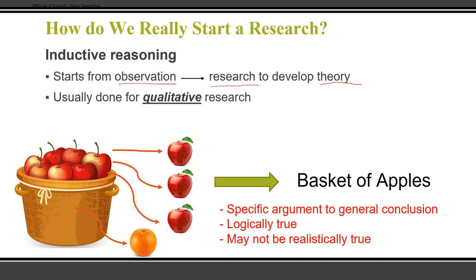From repeated observations we generalize the phenomenon into a probable conclusion — the more data we have, the greater the probability the conclusion is true. The conclusion is logically true because all three observations gave apples, but it may not be realistically true because you do not know whether there is an orange at the bottom of the basket. That is inductive reasoning.